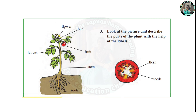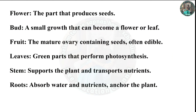Look at the picture and describe the parts of the plant with the help of the labels. Bud: a small growth that can become a flower or leaf. Fruit: the mature ovary containing seeds, often edible. Leaves: green parts that perform photosynthesis. Stem: supports the plant and transports nutrients. Roots: absorb water and nutrients and anchor the plant.